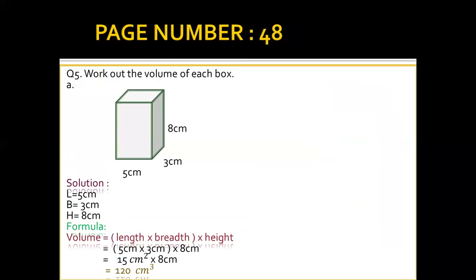Question 5: in this question we also calculate the volume, but the length, breadth, and height are already mentioned. We only put these values in the formula and calculate the volume of each figure. There are four parts: A, B, C, and D. In part A, length is 5, breadth is 3, and height is 8 cm.